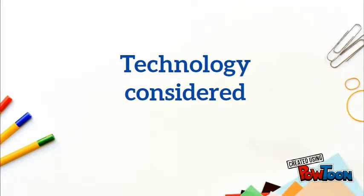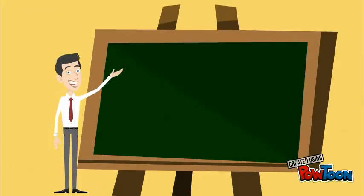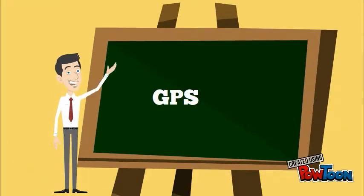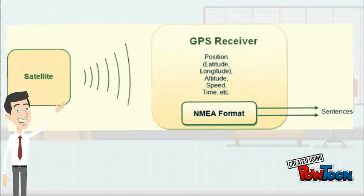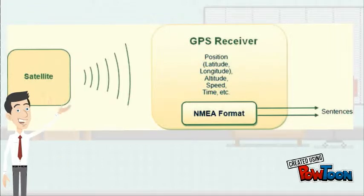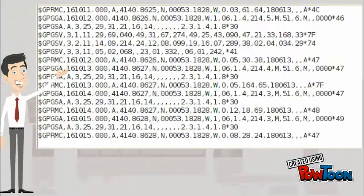Now let us see the technology considered in brief: GPS. So what is GPS? GPS stands for Global Positioning System. Basically, in a GPS module, the GPS receiver gets parameters from satellites nearby. These parameters include position, speed, altitude, time, etc. These parameters are converted into NMEA format, which can be shown in sentences.